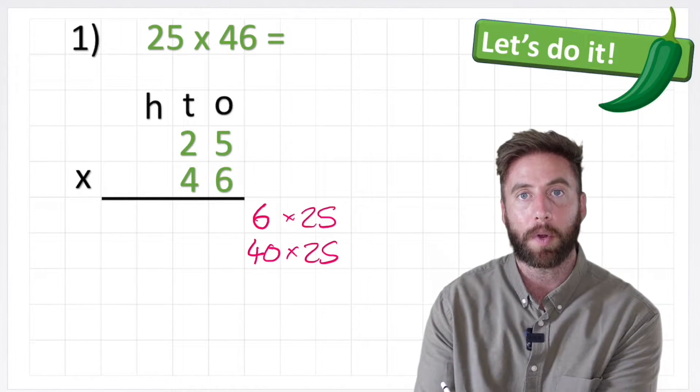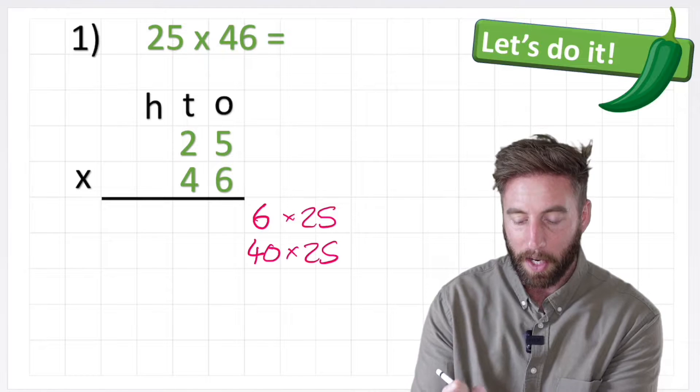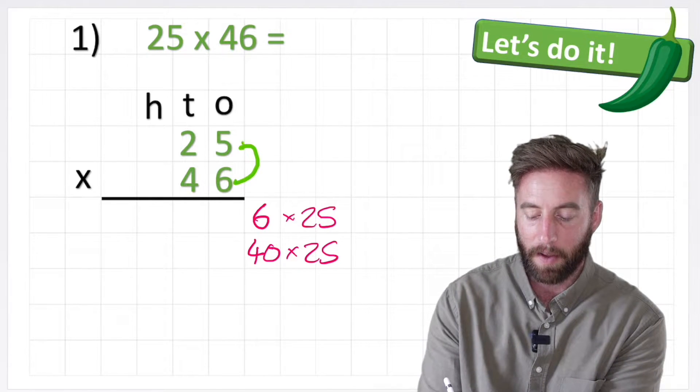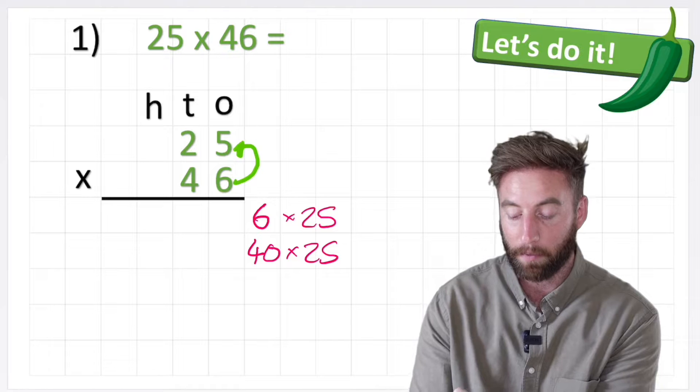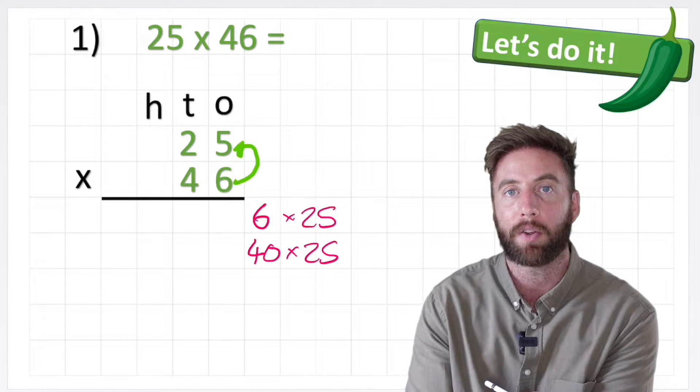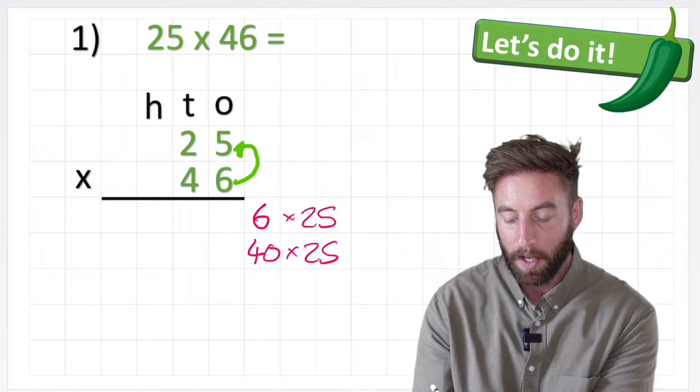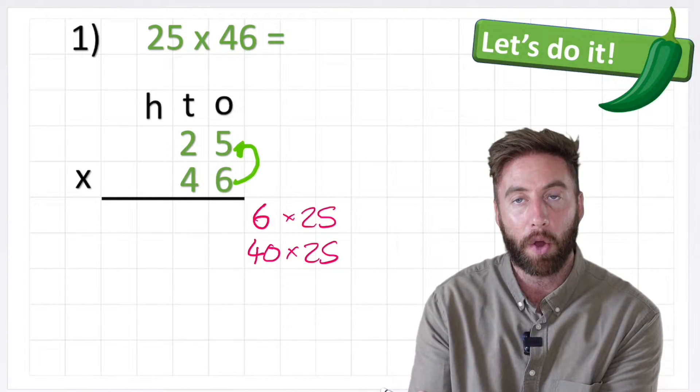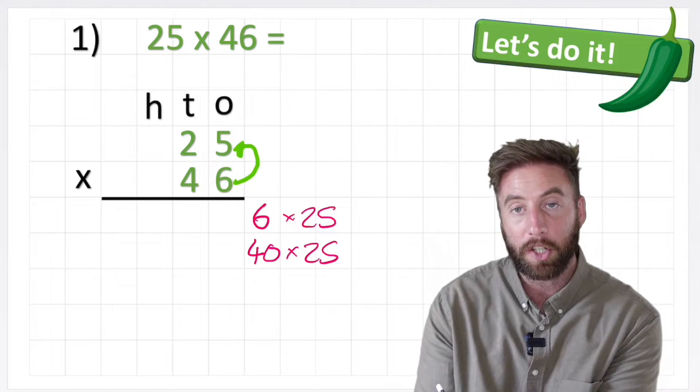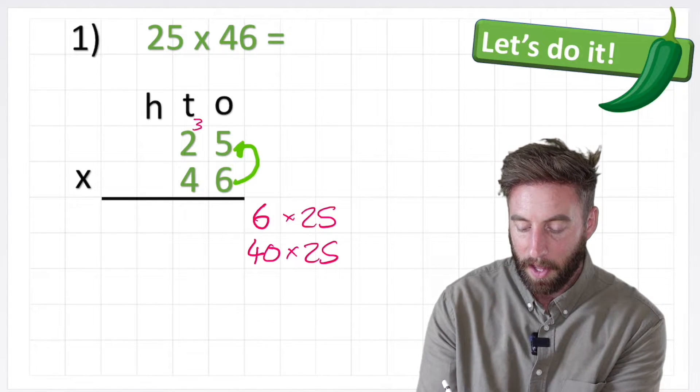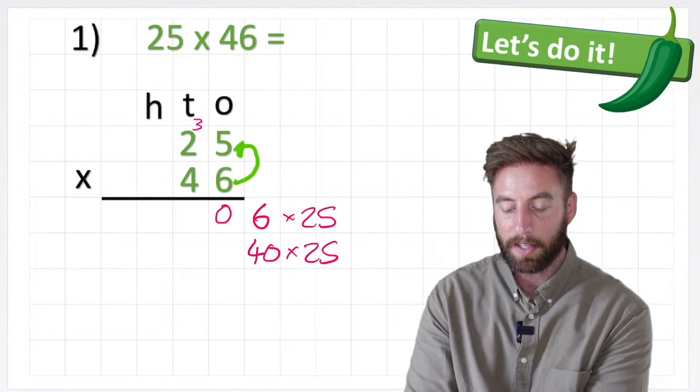So I'm doing 6 times 25, but again that's quite chunky so I can do it in small parts, and I'm going to do 6 times 5 first of all, and I'm choosing to do that because that's the smallest value, so if anything is bigger than 10 I can move it into the next column. So 6 times 5 is 30, and there we go, we have something bigger than 10, so I'm actually going to put my 3 up here and my 0 down there.